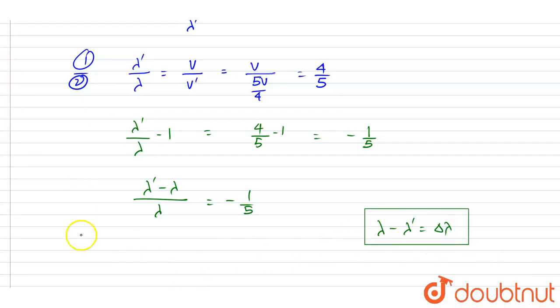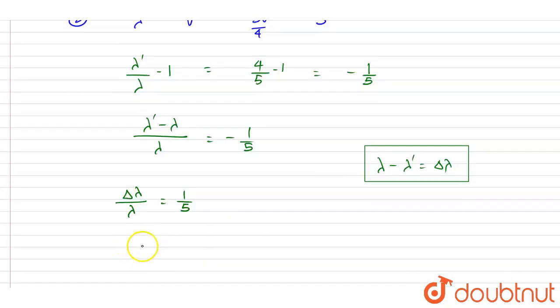So put the value here. I will write down delta lambda by lambda is equals to one by five. So from here we can write down lambda is equals to five delta lambda.